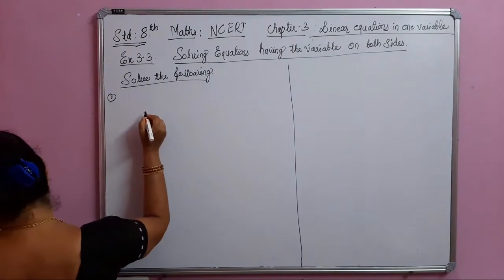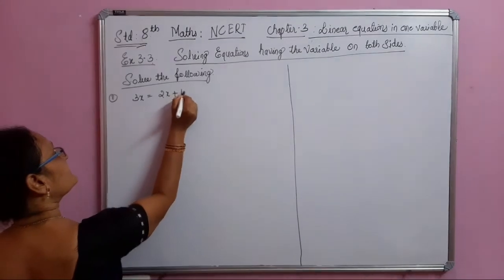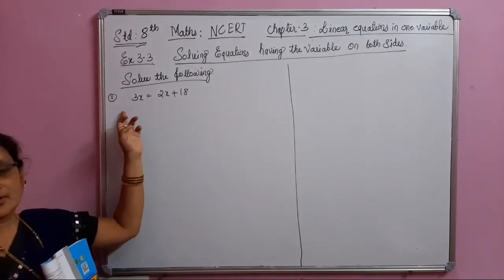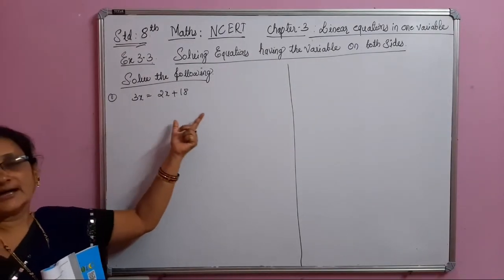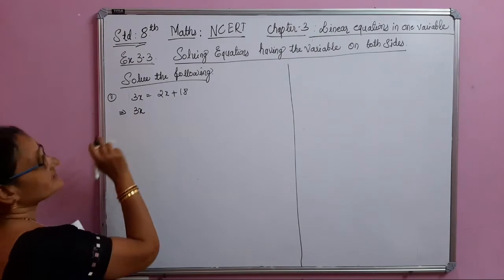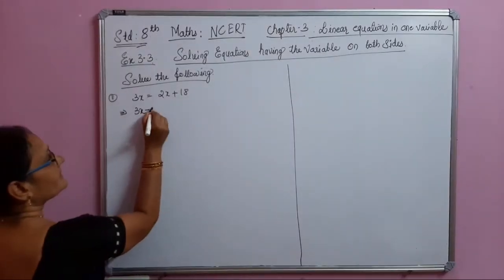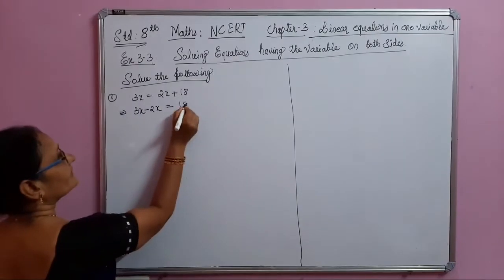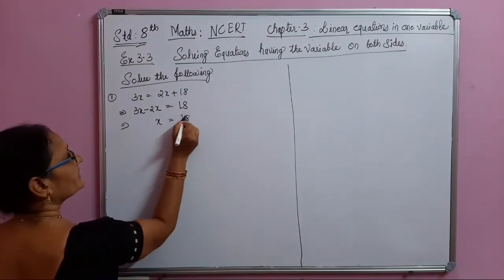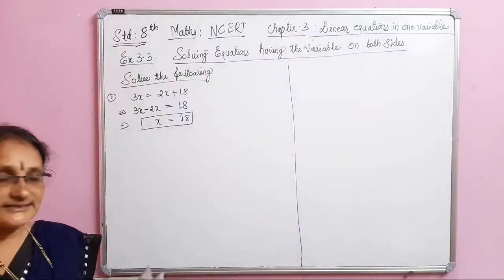The first problem is 3x equals 2x plus 18. Here the variable is on both sides, in the LHS and RHS. Using the transposing method, 2x comes to this side: 3x minus 2x equals 18, so x equals 18.